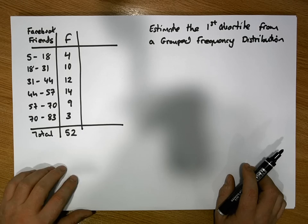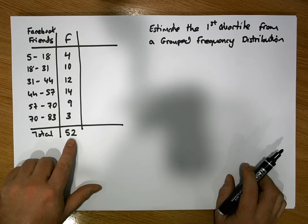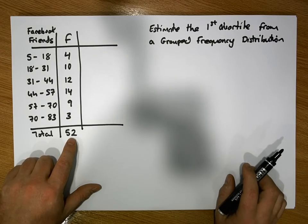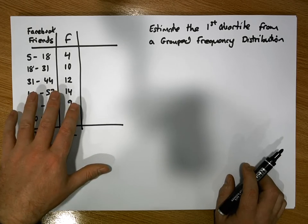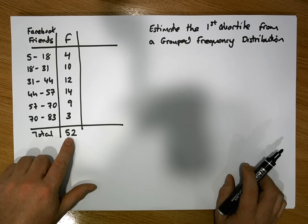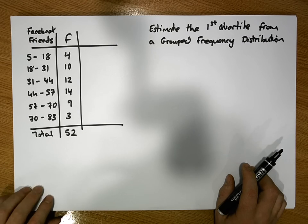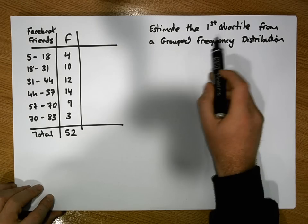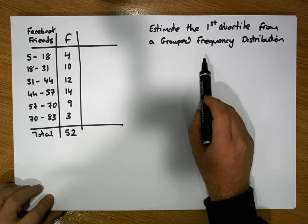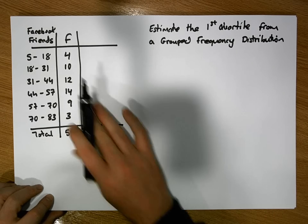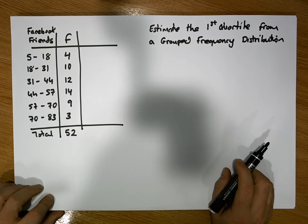In one of the earlier videos we had a raw data set representing the 52 responses, and we went through the process of constructing the appropriate grouped frequency distribution for a data set of 52 responses. This is the result. For this video we're concentrating on the first quartile calculation from this particular grouped frequency distribution.